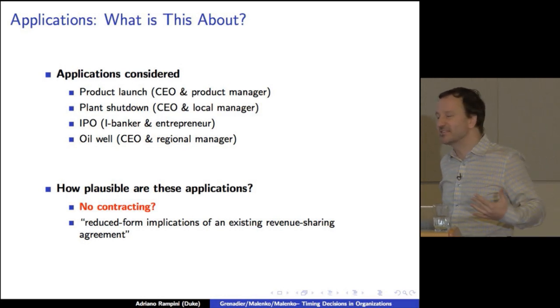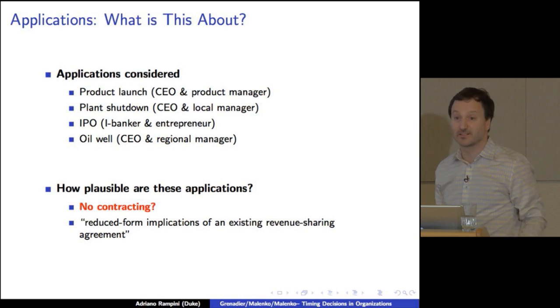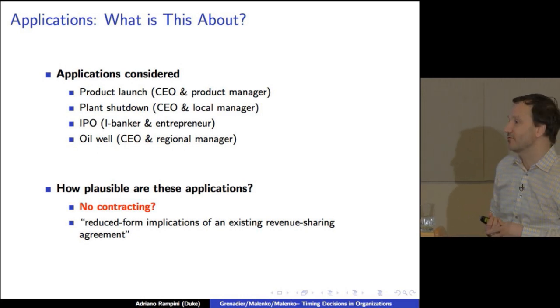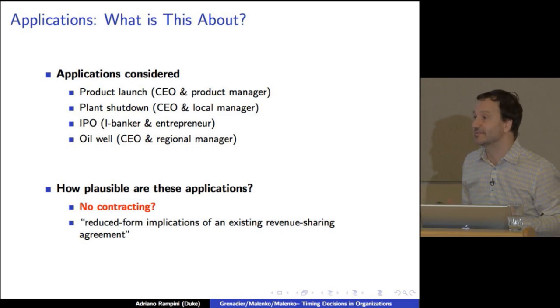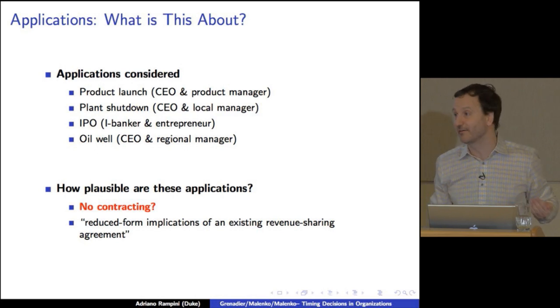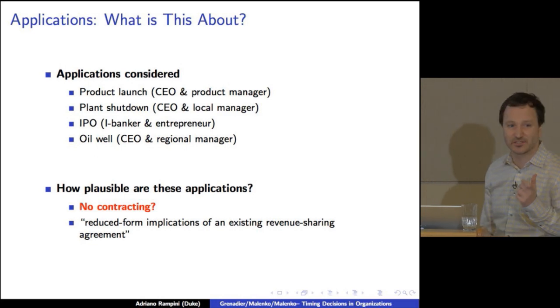It seems like, again, in this class of models, there's essentially no contracting. It seems a bit drastic. So I think the paper essentially says, look, this is reduced form, we're studying the reduced form implications of an existing revenue sharing agreement. But I think it would be worthwhile to spend a little more time about thinking, in what context is this the right model. So where, typically, we use these models often in the context of a board interacting with a CEO or something like that. But I think that would be useful to spend just a little more time thinking about what applications.